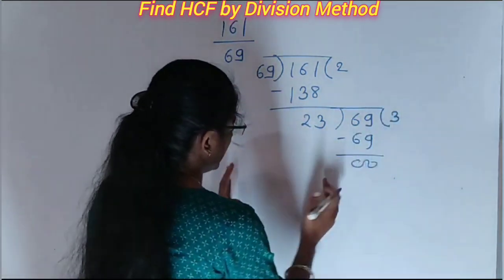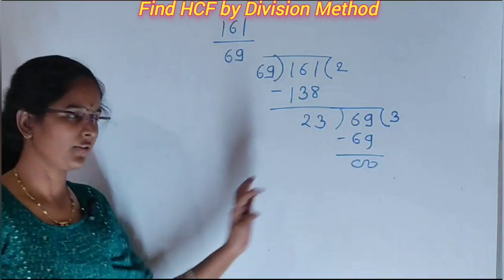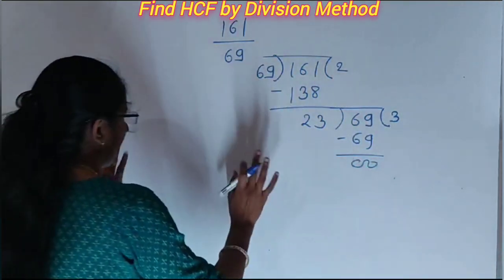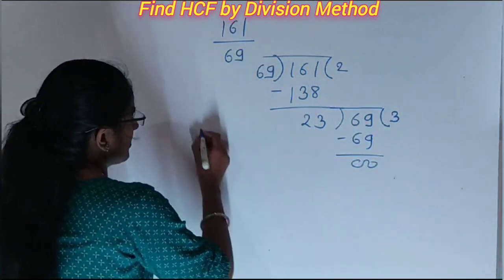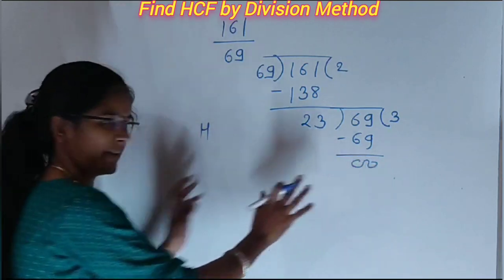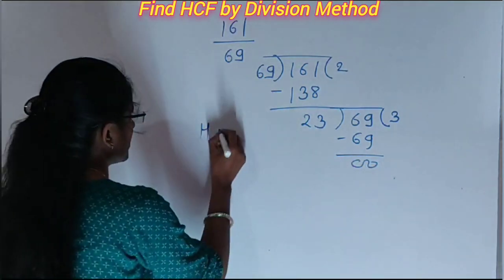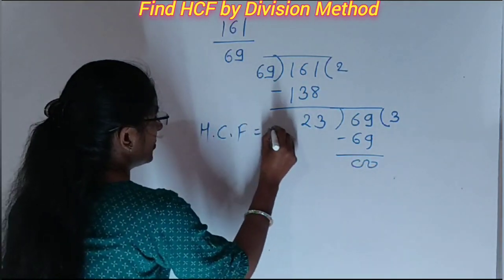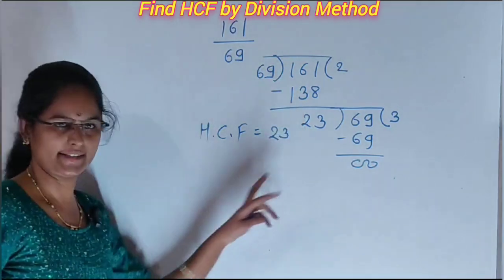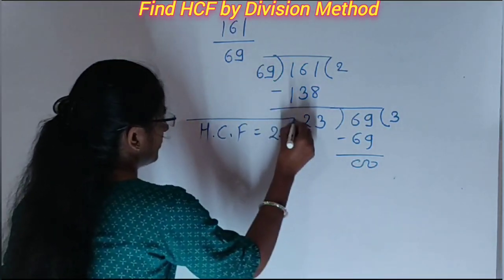Or you can do this on the other side also. We get the same answer. We get the remainder zero. It means our answer is finished. Then HCF is 23.